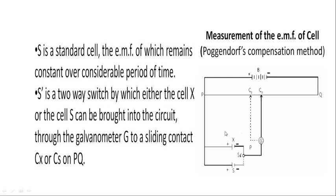S is the standard cell, whose EMF remains constant over a considerable period of time — it will not change. K is a two-way key by which you put either the working cell or the standard cell into the circuit, connected to the galvanometer G via a sliding contact. The sliding contact is made by the jockey at positions CX and CS.